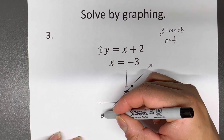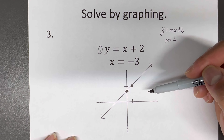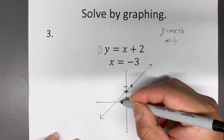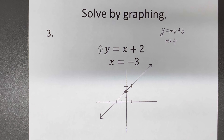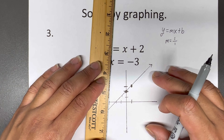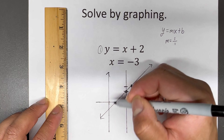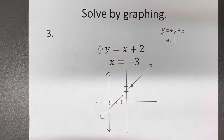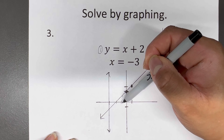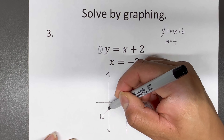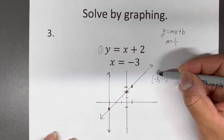The second equation, X equals negative three, looks a little weird. All that means is it's going to be a vertical line — straight up and down at negative three. We draw a straight vertical line there. The intersection of the two lines is at (-3, -1), and that's the solution for this one.